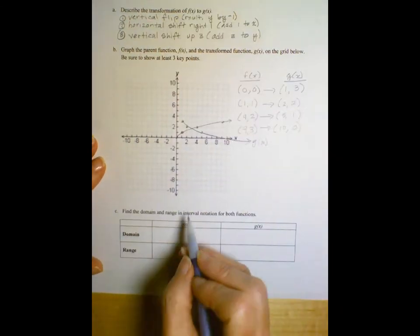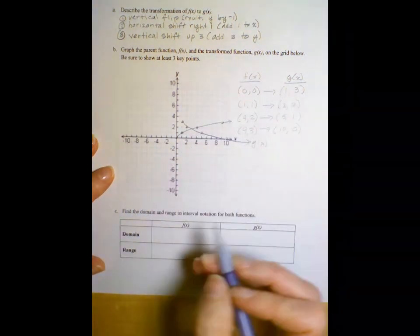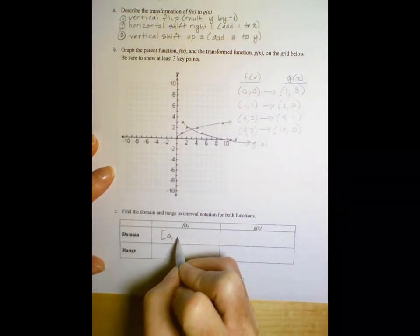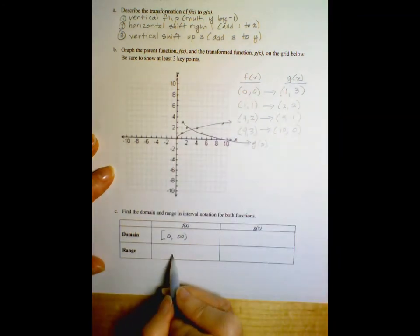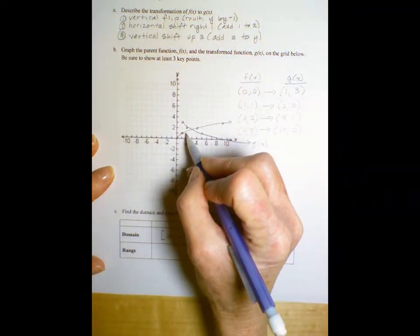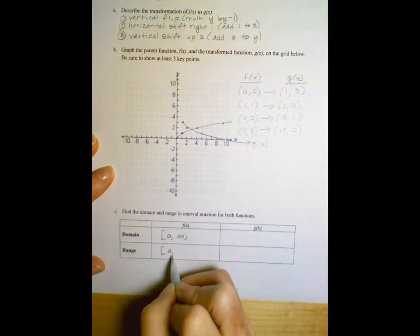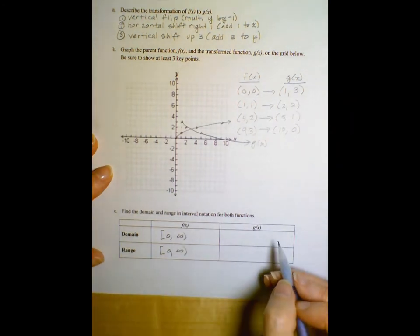Let's talk about the domain of f of x, our original parent function, and we said that we can't allow any negatives to get under that radical. So the lowest we can go is zero and all the way to positive infinity. What does that do for the range? What is our range? Well, the lowest our y values are is zero, and it goes to positive infinity. So that's the domain and range for the parent function.